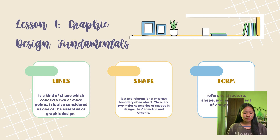Next is Form. Form refers to the structure, shape, and arrangement of components such as breadth, length, and depth of a three-dimensional artwork, including architecture or sculpture.